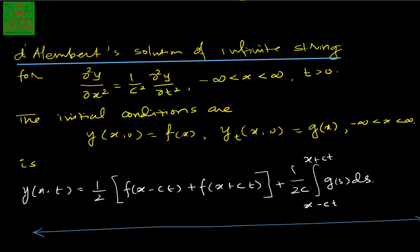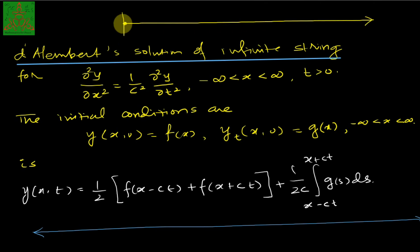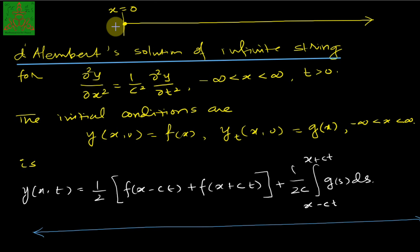The problem of a semi-infinite string means we are fixing one end and the other end is free. We fix at one end, say x equal to 0, where the string is attached with some hook or something like that. We make a motion into the string and need to find out what will be the displacement y for given position x and time t.